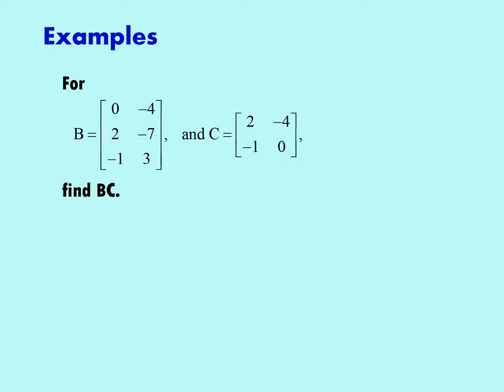Here's an example. We have a matrix B here which has three rows and two columns, so it's a 3 by 2, and a matrix C which is a 2 by 2.